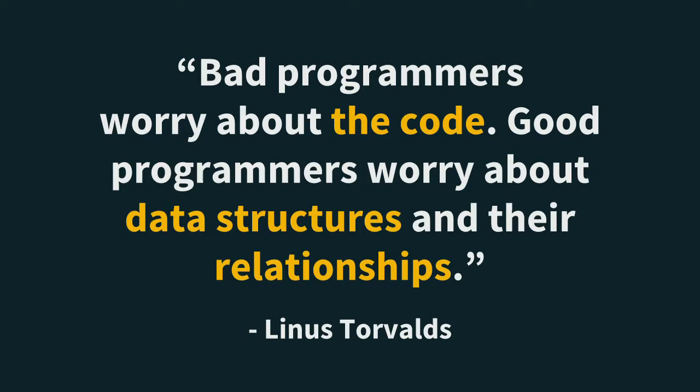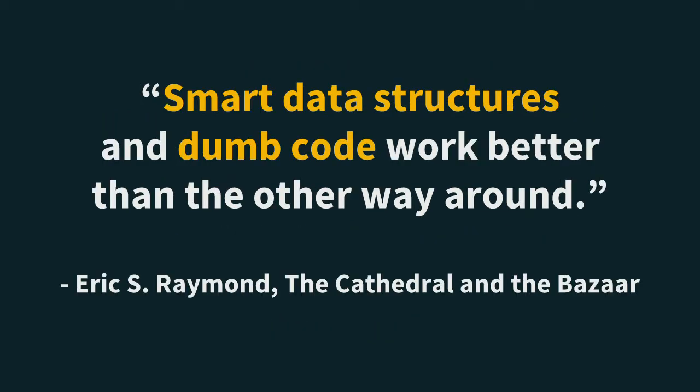I found a quote that inspired this talk: "Bad programmers worry about the code. Good programmers worry about data structures and their relationships." And another one: "Smart data structures and dumb code work better than the other way around." In the context of Drupal, a data structure is an entity type. We use entity types to label data — this is a user, this is an article, this is a blog post. Everything interesting we do revolves around those data structures, those entity types.